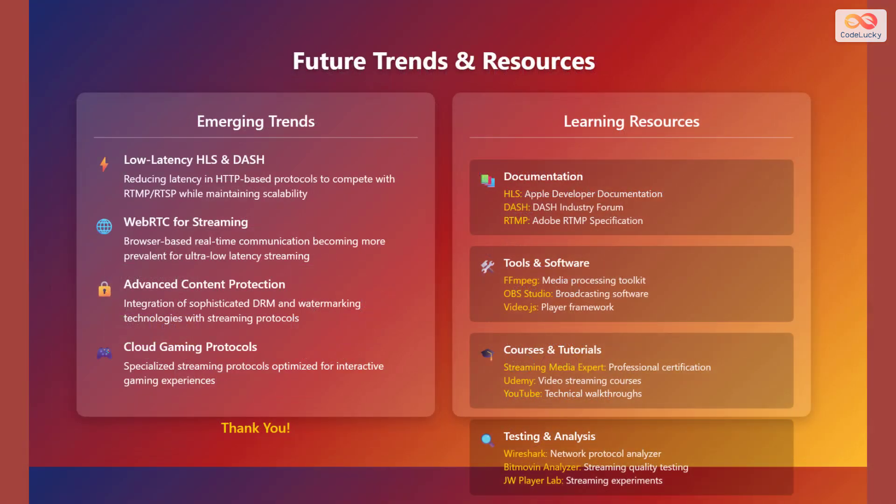Finally, let's look at some future trends in streaming. Low-latency HLS and DASH are emerging to compete with RTMP and RTSP. WebRTC is becoming more prevalent for ultra-low latency streaming. Advanced content protection technologies and cloud gaming protocols are also on the rise. To learn more, check out the Apple developer documentation for HLS, the DASH Industry Forum, and the Adobe RTMP specification. Tools like FFmpeg, OBS Studio, and Video.js are invaluable. Consider professional certifications and online courses, and tools like Wireshark and Bitmovin Analyzer for testing and analysis.